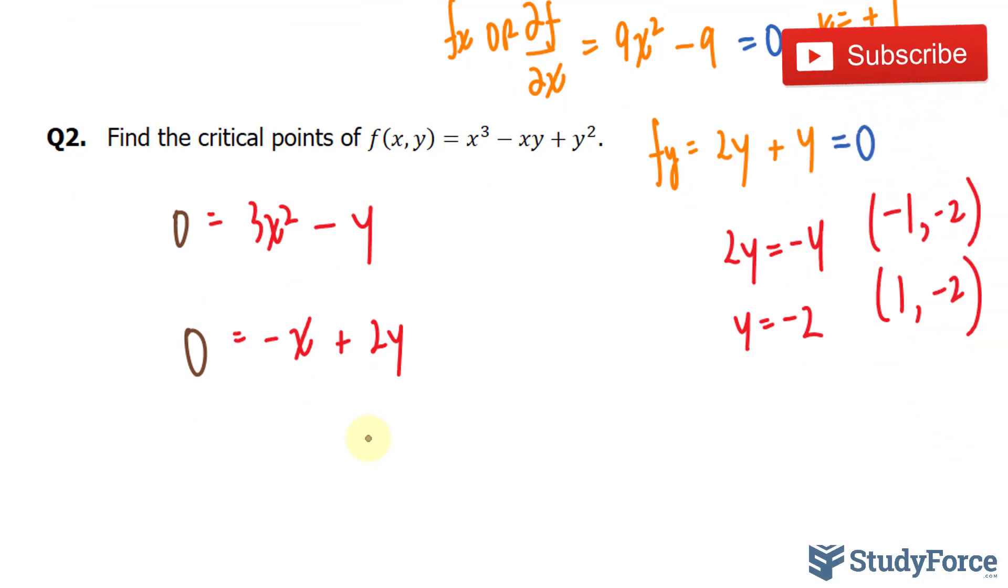So now that both equations are set to 0, and don't confuse this with a 4, that is a y, we have to solve this system of equations simultaneously. And the way we can do that is we can take this negative x over. We have x is equal to 2y, and we can substitute the content of x, 2y, into here.